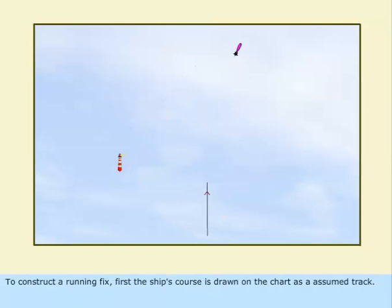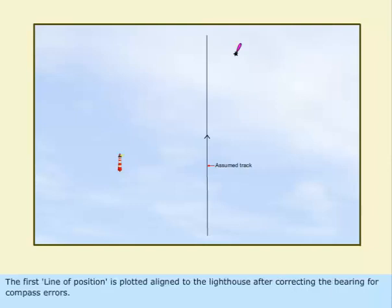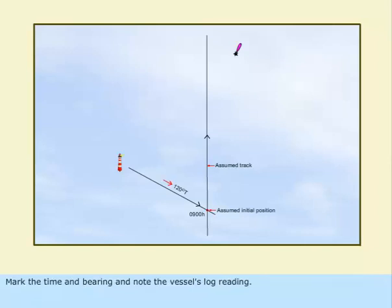To construct a running fix, first the ship's course is drawn on the chart as an assumed track. The first line of position is plotted aligned to the lighthouse after correcting the bearing for compass errors. Mark the time and bearing and note the vessel's log reading.